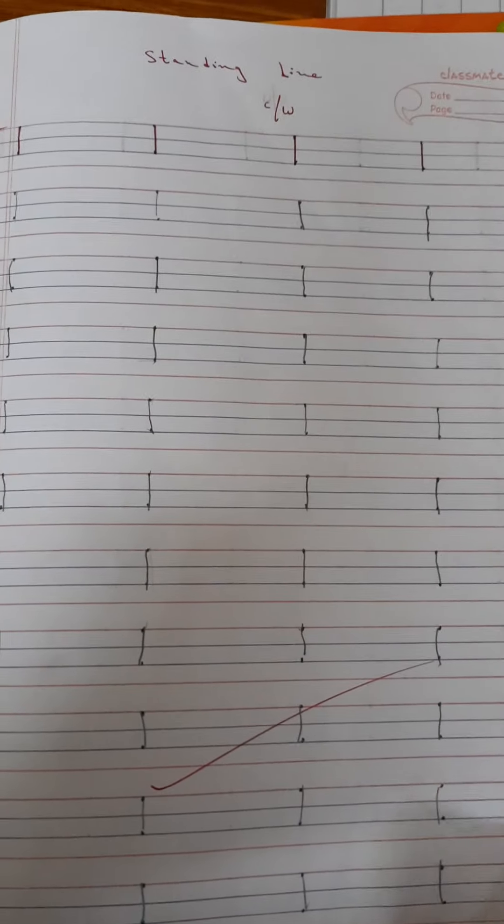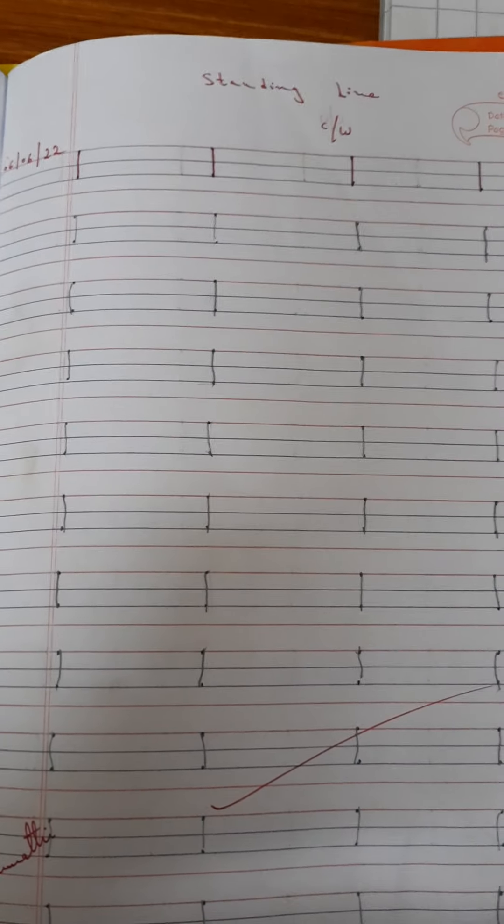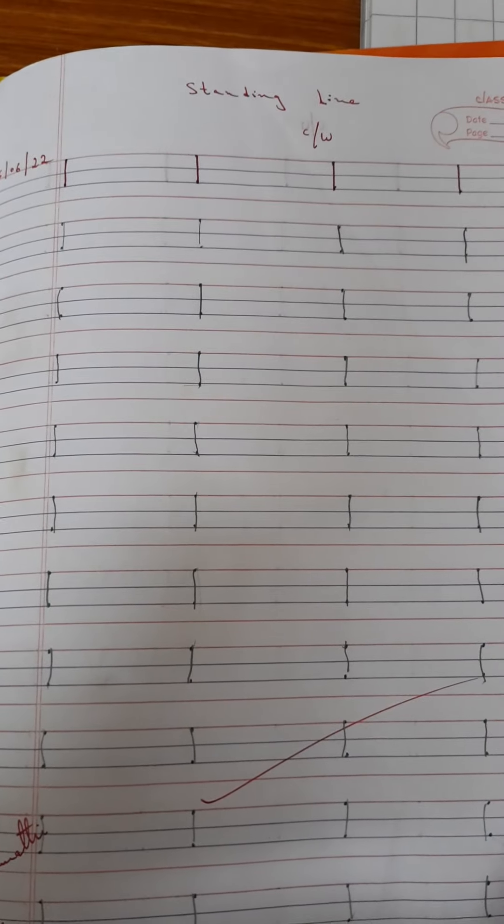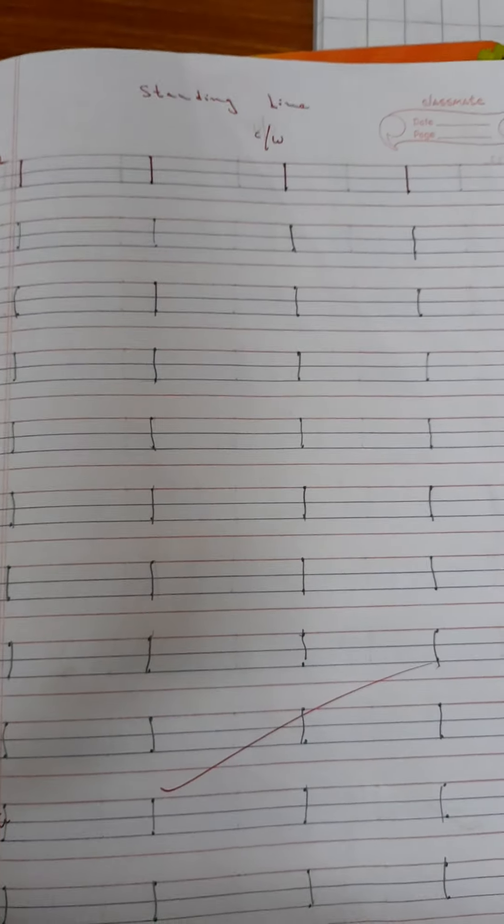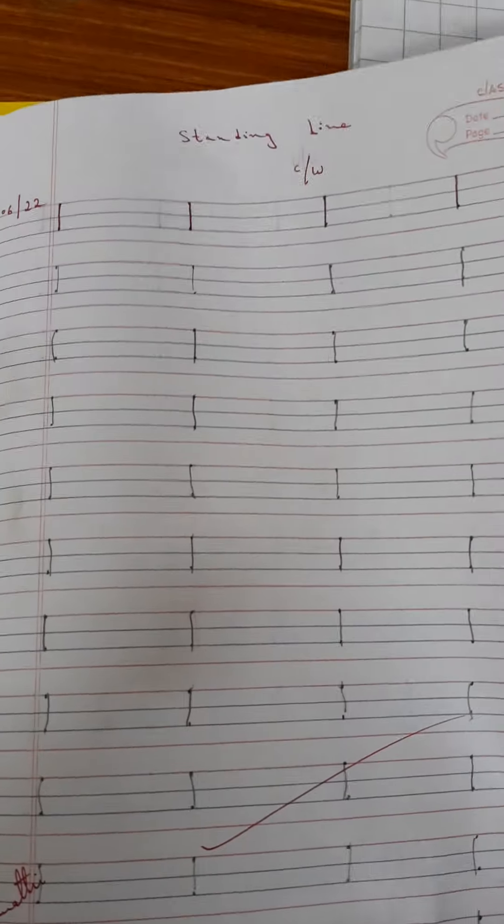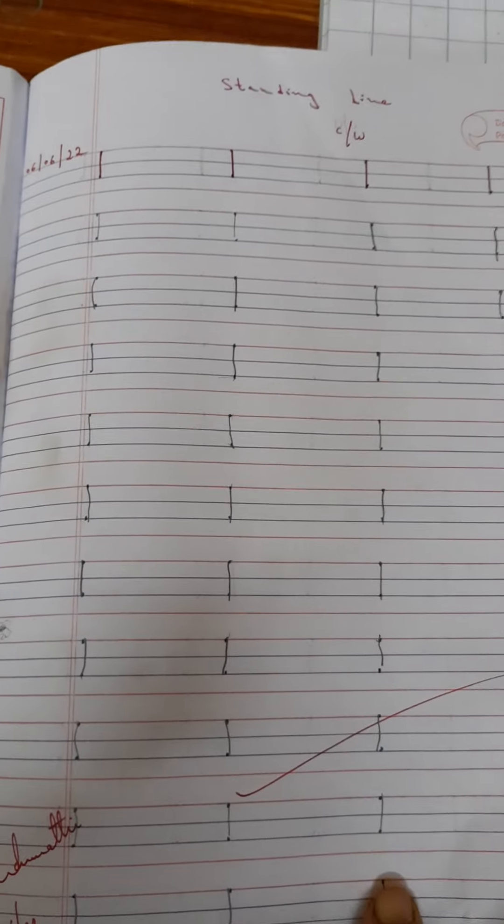Hello mummies, welcome to my channel Learning with Flora. In today's video, let's see the June month writing activities for LKG class kids. This is a four-lines notebook, so they are writing alphabets. This is the standing line, then again standing line.